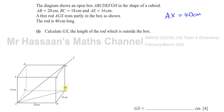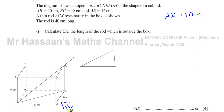It doesn't look like a right angle in the diagram because it's a 3D diagram. But if you look at triangle ACG from the side — as if looking in that direction — you'll see A, C, and G forming a right angle triangle with the right angle at C.